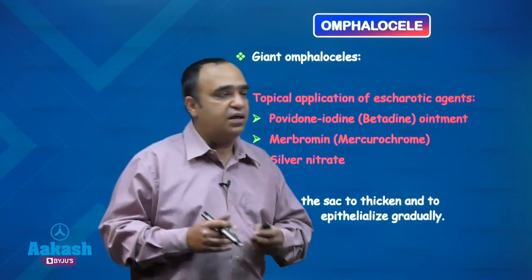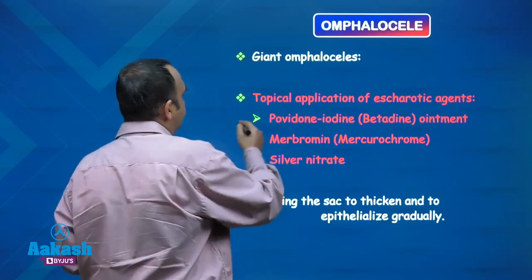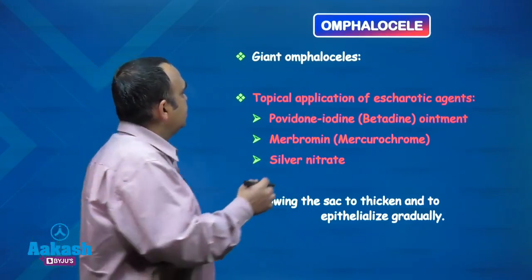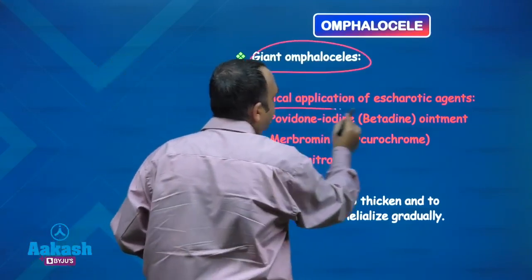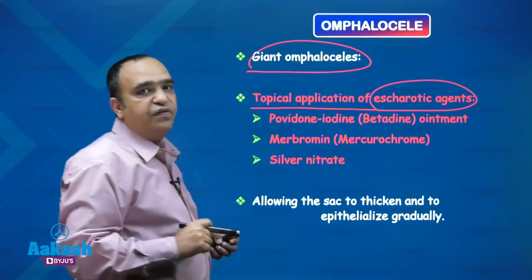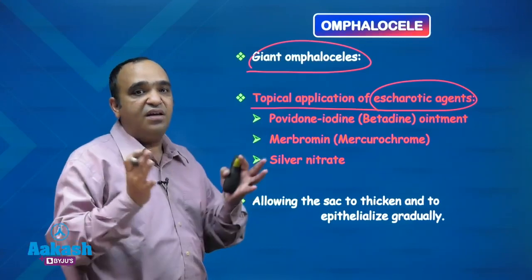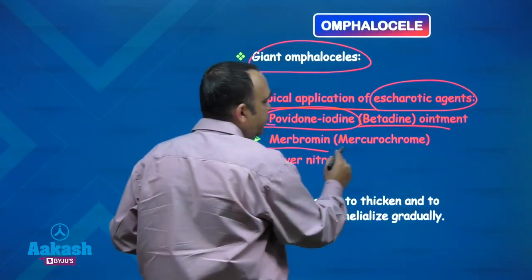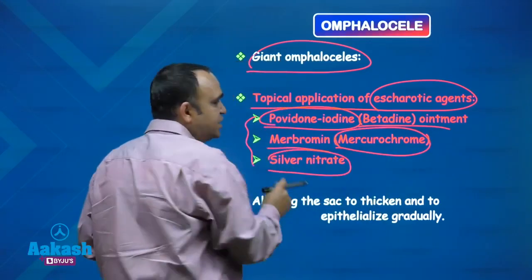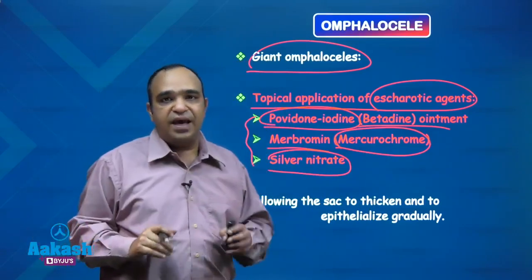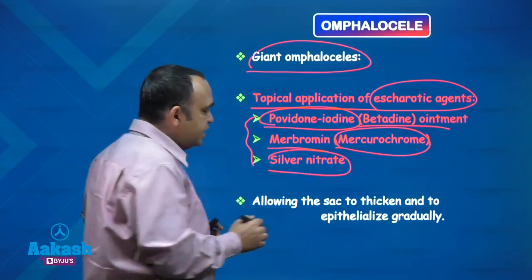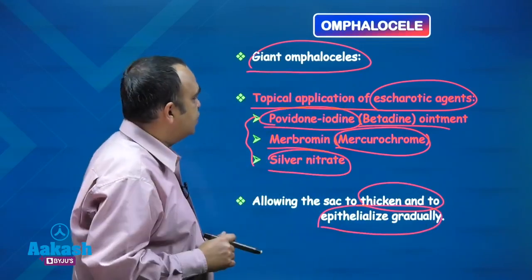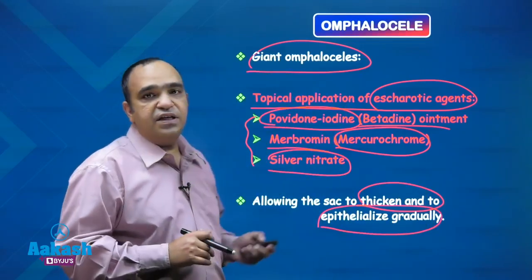A technique specific to omphalocele — not used in gastroschisis, since that bowel is exposed — is topical application of escharotic agents in giant omphaloceles. The agents form an eschar, meaning thickening of the sac. Commonly used chemicals include povidone-iodine such as Betadine ointment and merbromin (mercurochrome). These ointments are applied over the sac of the omphalocele, leading to thickening of the sac and gradual epithelialization and closure of the defect.